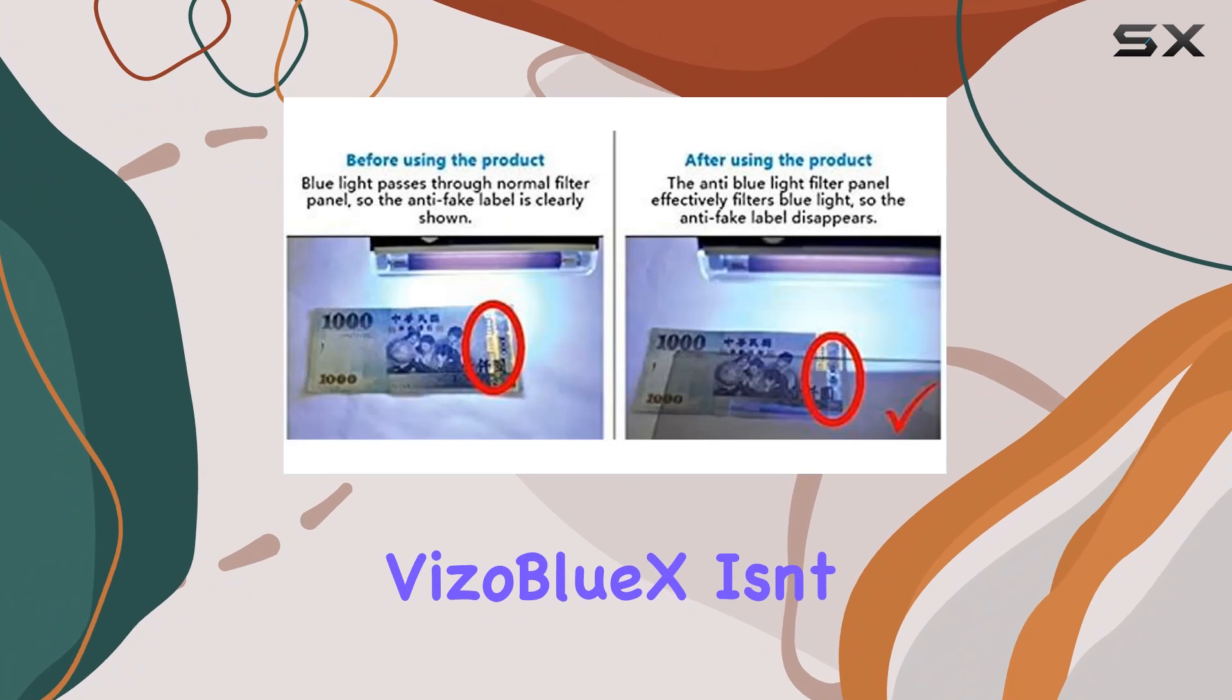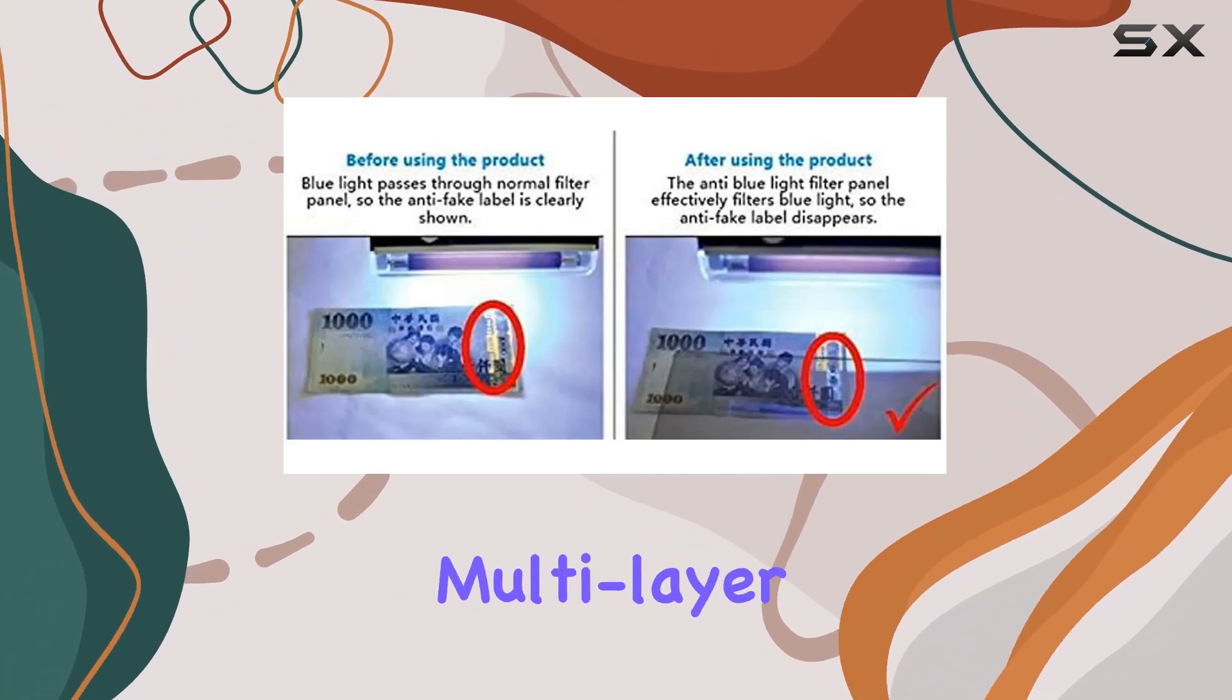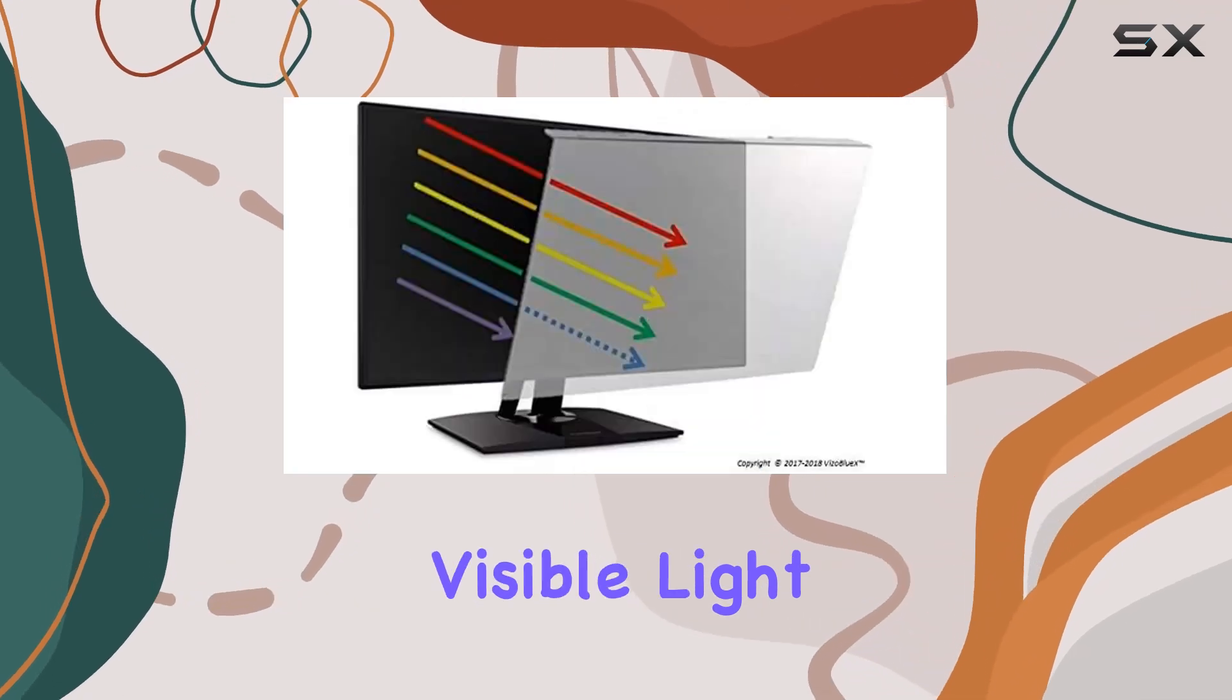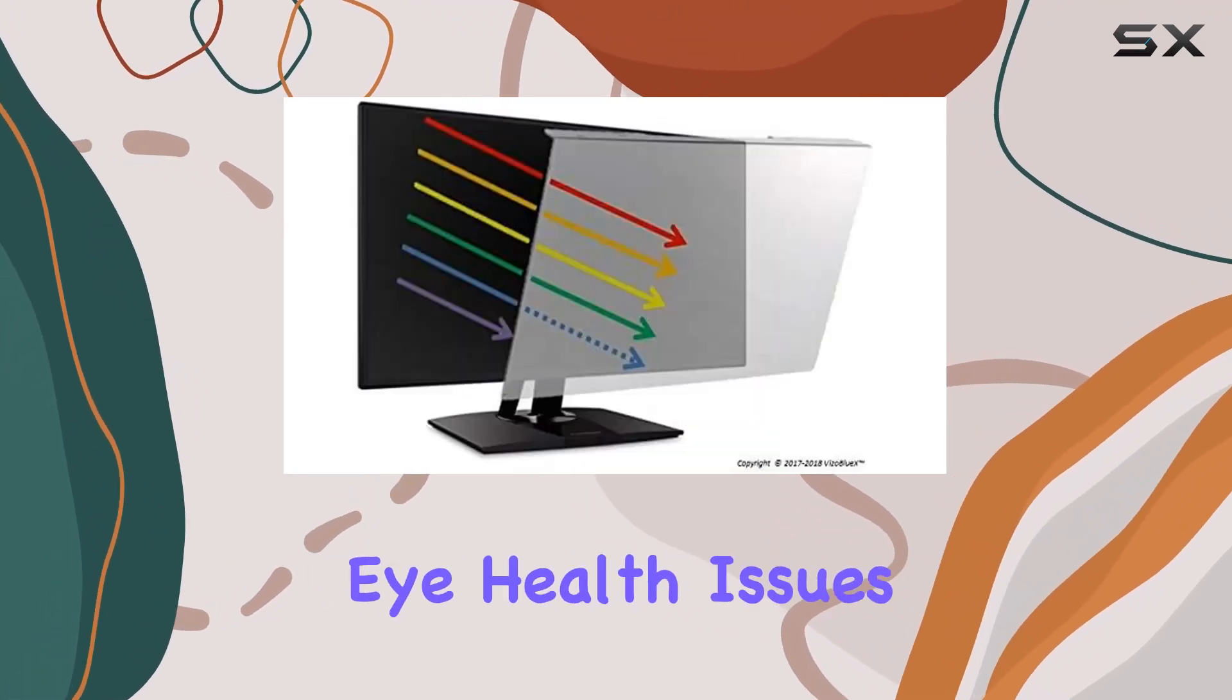The Viso Blue X isn't just a simple cover. It's a multi-layer defense system against hazardous UV and HEV, high-energy visible light, which are known to cause long-term eye health issues.